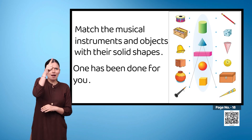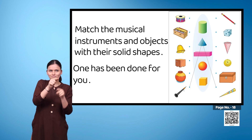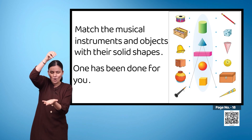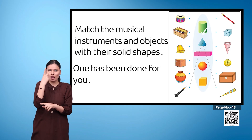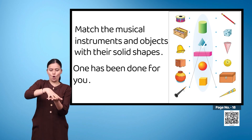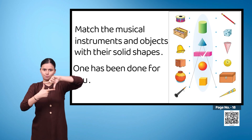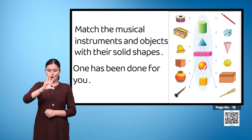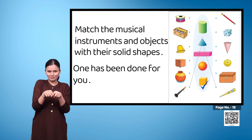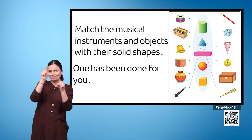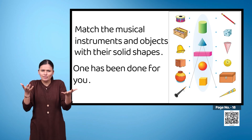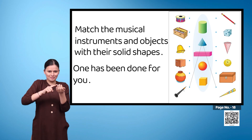In the middle we have five shapes: the first one is cylindrical, then conical, third is a cuboid, fourth is spherical, and the fifth is a cube. One has been done for you — the musical instrument Shehnai and the object paper cone have a conical shape.